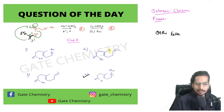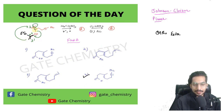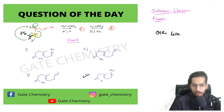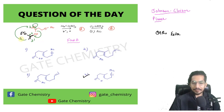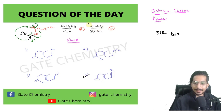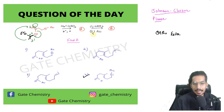After the 3,3-sigmatropic reaction, you get a general product structure. Once the bond breaks, you end up with an ester — C double bond O, OEt. So a 3,3-sigmatropic reaction takes place and an ester is formed. Once we have the ester and you add lithium aluminium hydride, LiAlH4 will reduce the ester to the alcohol.